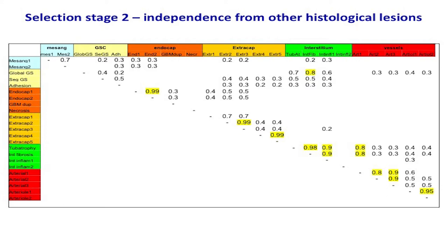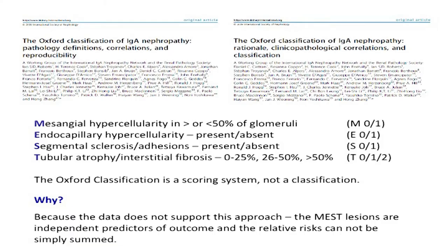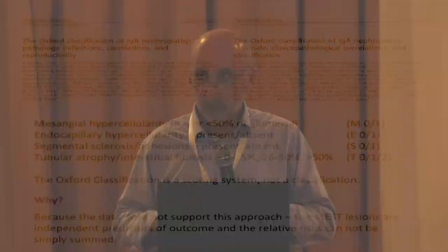After this filter, we were left with only six histological lesions to correlate with clinical features at presentation and outcome. We followed the evidence and had no preconceptions of what we would find. At the end of the day, the best way to express the histology data was to come up with a scoring system — not a classification at all — because the evidence base didn't support a classification. This upset a lot of people, including several members of the working group who had expected a lupus-like classification, but we didn't produce one because the evidence didn't support it.